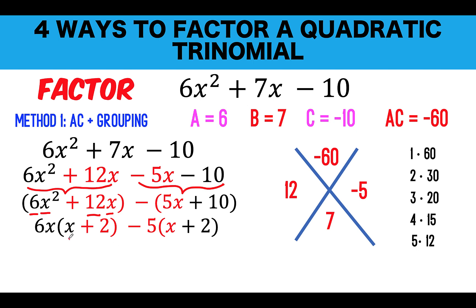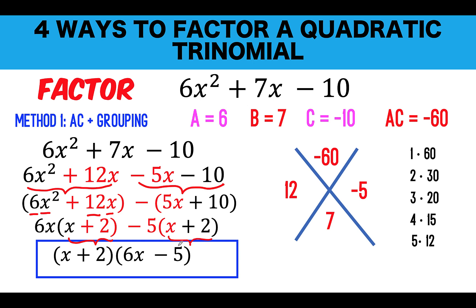After grouping, look for common factors. There is a common factor of 6x in the first group: 6x² ÷ 6x = x and 12x ÷ 6x = 2. In the second group, the common factor is 5: 5x ÷ 5 = x and 10 ÷ 5 = 2. Notice that x + 2 appears in both groups, so factor it out. What remains is 6x minus 5, giving the factored form (x + 2)(6x − 5).